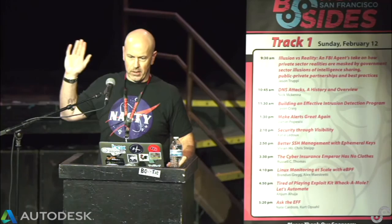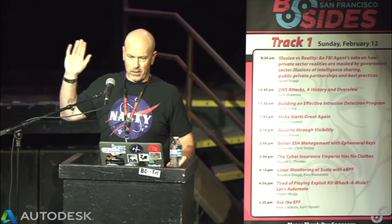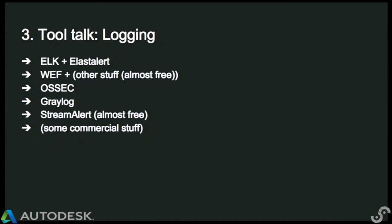Let's pivot into tool talk. I'm going to mention a bunch of free and/or open source and/or cheap products I've seen work in organizations. On the topic of logging, there's a lot of great commercial software out there, but we also use non-commercial software. Elasticsearch and Kibana plus Elastalert from Yelp is a great stack. Windows Event Forwarding from Microsoft — also very cheap, pretty close to free — scales nicely if you have Microsoft environments. OSX can do logging as well. Graylog is also nice. Streamalert, from my former colleagues at Airbnb, was just released at Enigma — it's pretty fantastic. It's not exactly a SIEM, but it's on its way to being one.